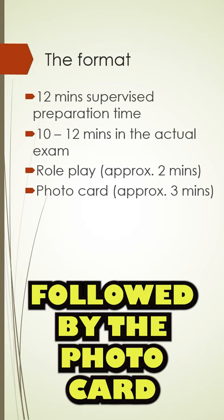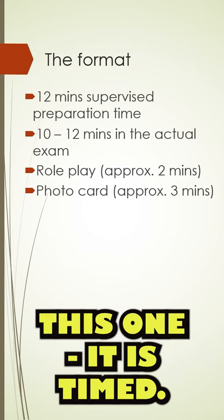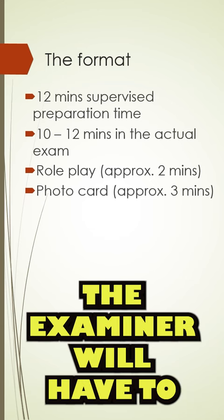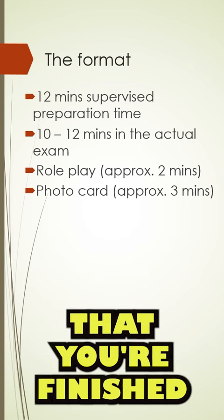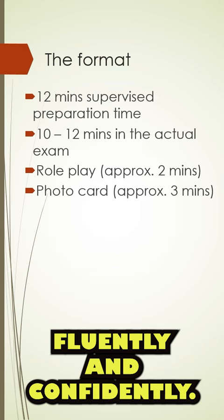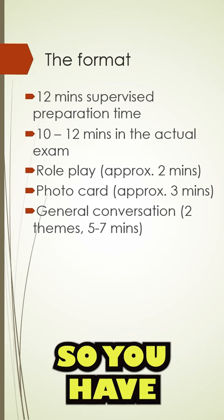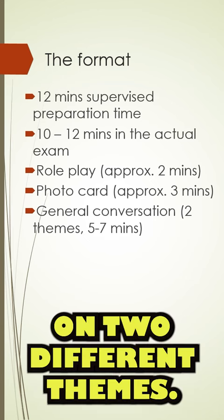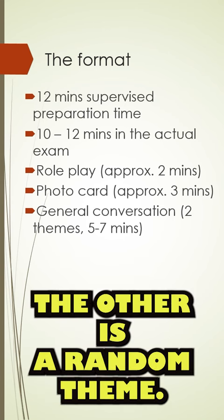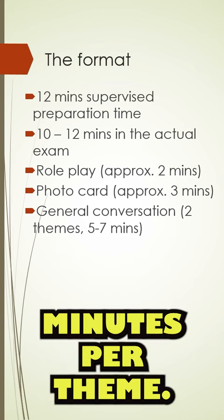This is followed by the photo card, which is approximately three minutes. This one is timed — you can't go over three minutes. If you're still speaking, the examiner will have to cut you off, but it might be that you're finished quicker than three minutes, and that's quite normal for people who are speaking fluently and confidently. Finally, there's the general conversation. You have two conversations on two different themes — one of them you've chosen, the other is a random theme — and for that you have five to seven minutes, so it's two and a half to three and a half minutes per theme.